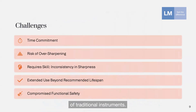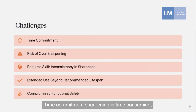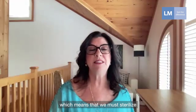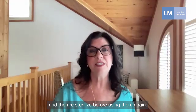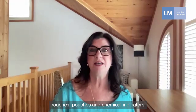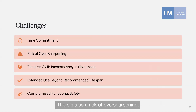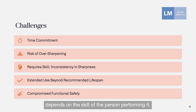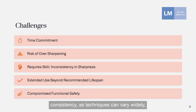The challenges of traditional instruments include time commitment, as sharpening is time-consuming especially in a busy practice. Many regions globally now prohibit chairside sharpening due to infection prevention and control concerns, meaning instruments must be sterilized, sharpened, and then re-sterilized before use — adding to workload and costs including sterilization pouches and chemical indicators. There's also a risk of over-sharpening, removing too much metal and altering the instrument's original design, diminishing its effectiveness and reducing its lifespan. Inconsistency in sharpness depends on the skill of the person performing it; ideally a single person should be responsible to maintain consistency.